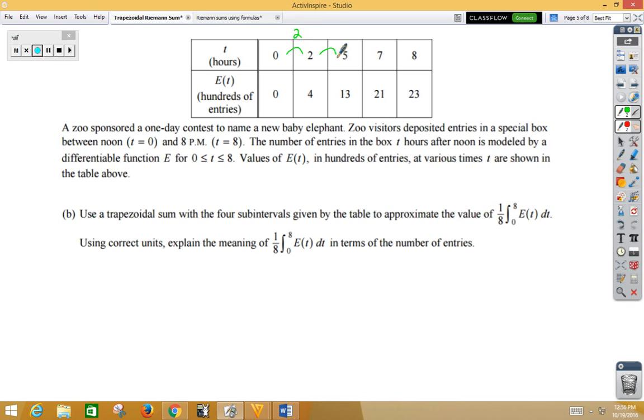We're skipping by 2, by 3, by 2, and by 1. Use a trapezoidal sum with four subintervals, so n is 4, given by the table to approximate. Notice the 1/8 means it's an average, and then we're going to want to explain the meaning of that.